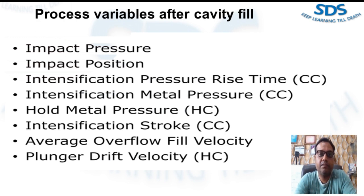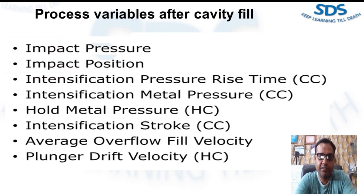Intensification stroke is a variable found in cold chamber die casting machines. The intensification stroke is the distance traveled after the impact position. It indicates how much shrinkage volume in the casting is replaced during intensification. This value can be compared to the shot volume to determine the percentage of shrinkage eliminated during the intensification.